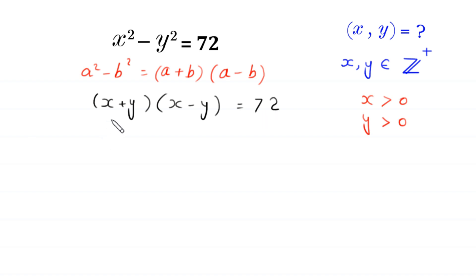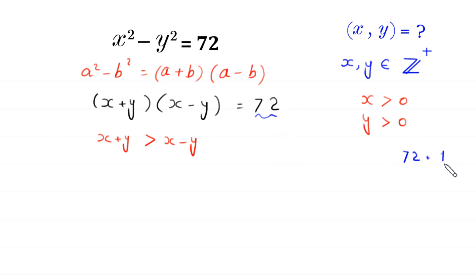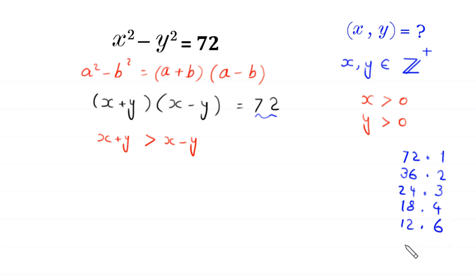We note that x plus y is greater than x minus y. So 72 can be factorized as 72 times 1, 36 times 2, 24 times 3, 18 times 4, 12 times 6, and 9 times 8. So we have six cases: case 1, case 2, case 3, case 4, case 5, and case 6.